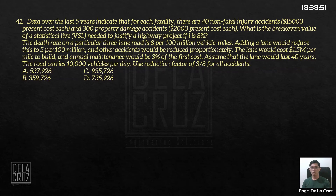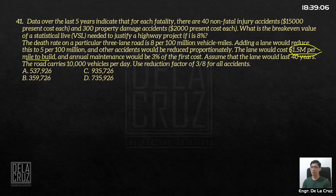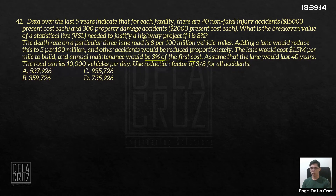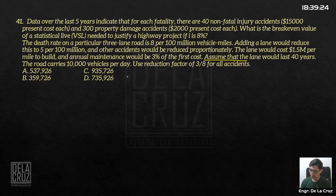Adding a lane would reduce the death rate by 5 per 100 million vehicle miles, and other accidents would be reduced proportionately. The lane would cost 1.5 million per mile to build, and annual maintenance would be 3% of the first cost. Assume the lane would last 40 years. The road carries 10,000 vehicles per day.